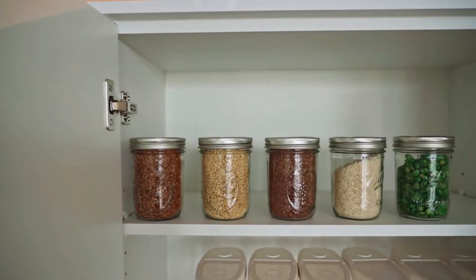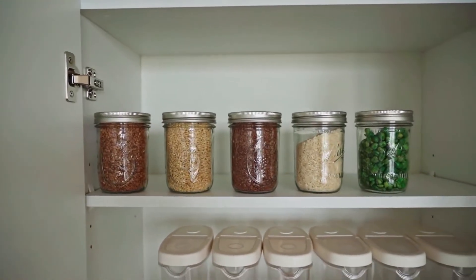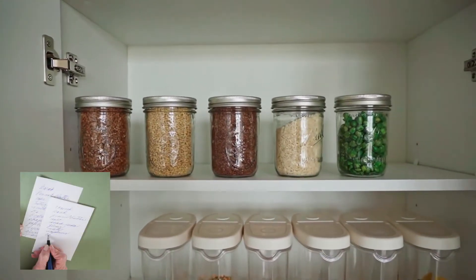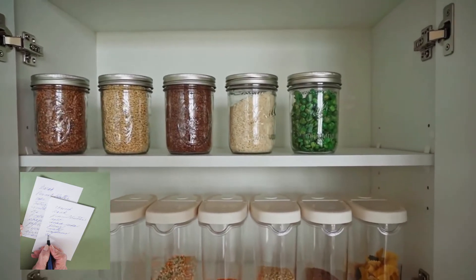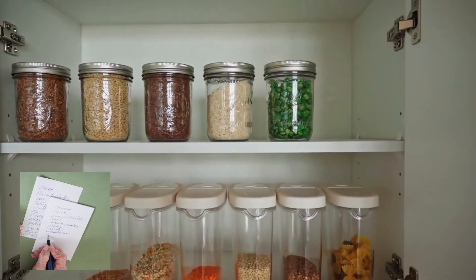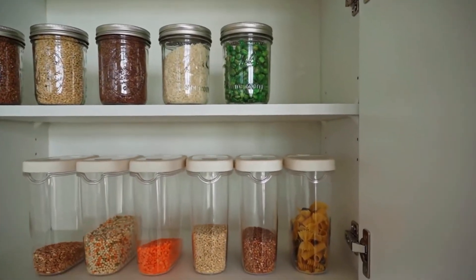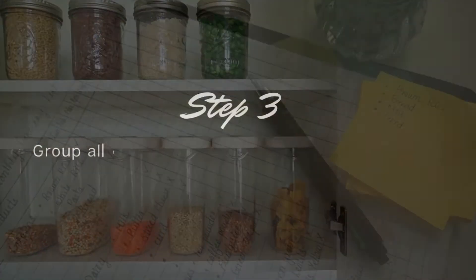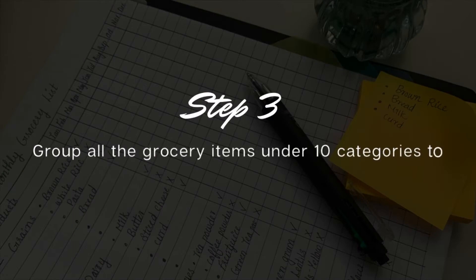Step 2: list all the grocery items which you are currently using in your home. Thoroughly check what all other things you're using in your home, then list only the things that you need. Don't list the things that you are not going to stock again.